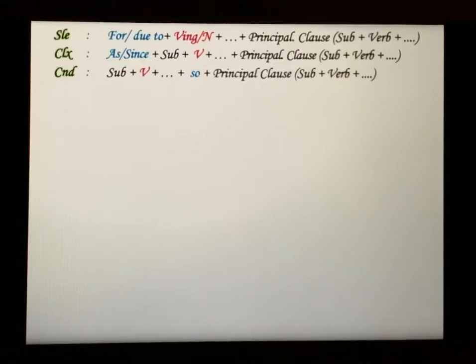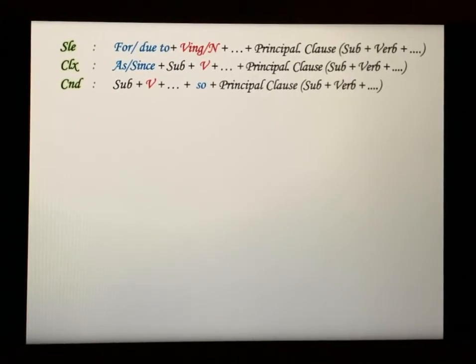Today we will learn two new rules. The first rule is about 'for' or 'due to'. For simple sentences, we use 'for' or 'due to' with verb+ing, then the principal clause. For complex sentences, we use 'as' or 'since' with subject plus verb, then the principal clause.